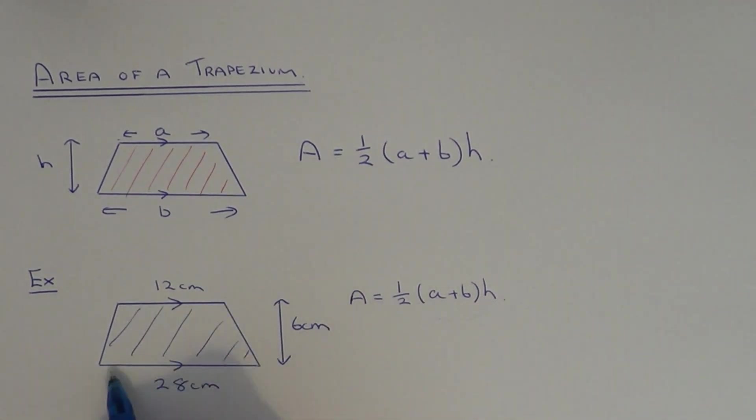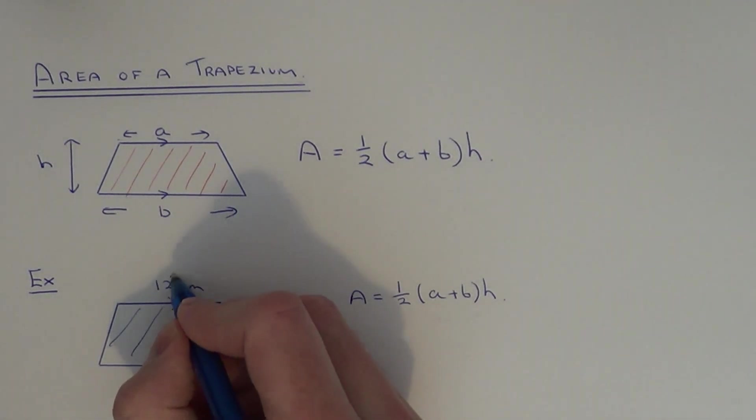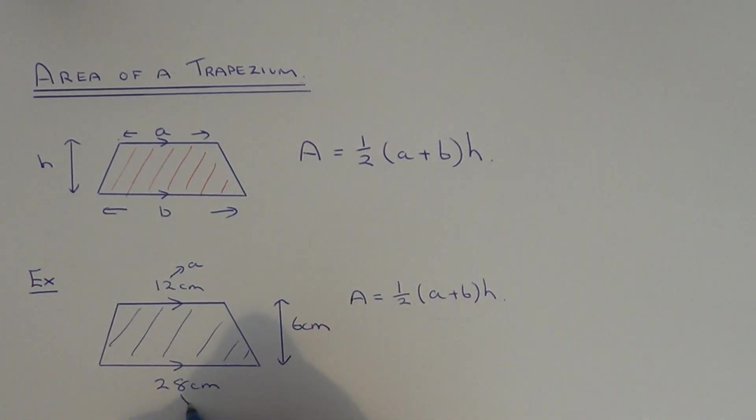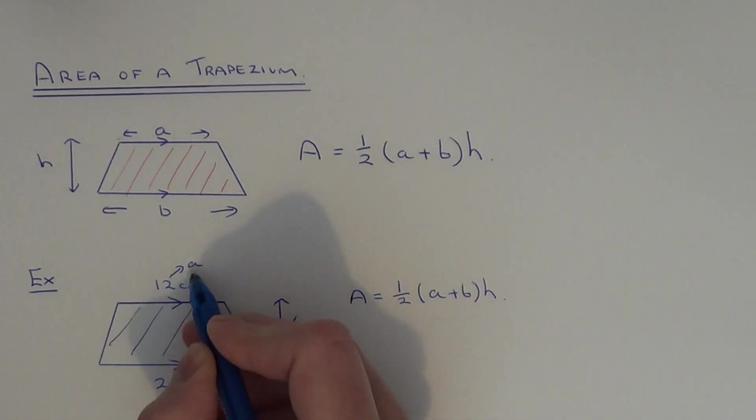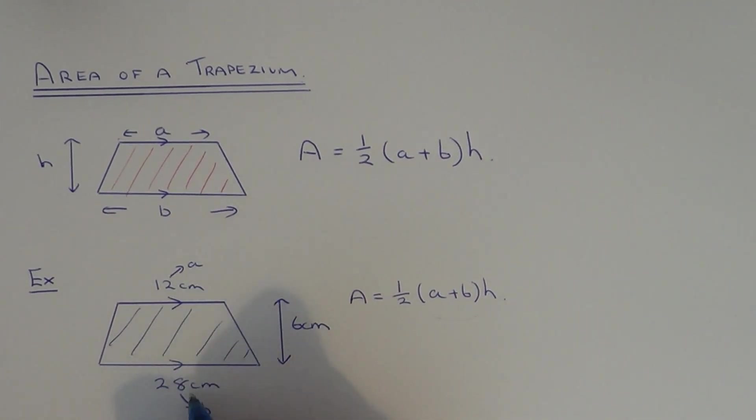a and b are the lengths of the two parallel sides. So this is a, this is b. It doesn't matter which one you call a and which one you call b. Both ways will give you the same answer. h is the distance between the parallel sides. So this is six centimetres. So if we substitute these three measurements into our formula.